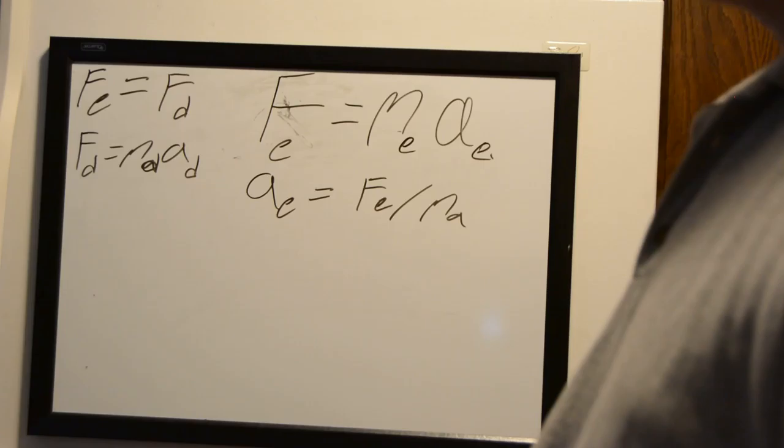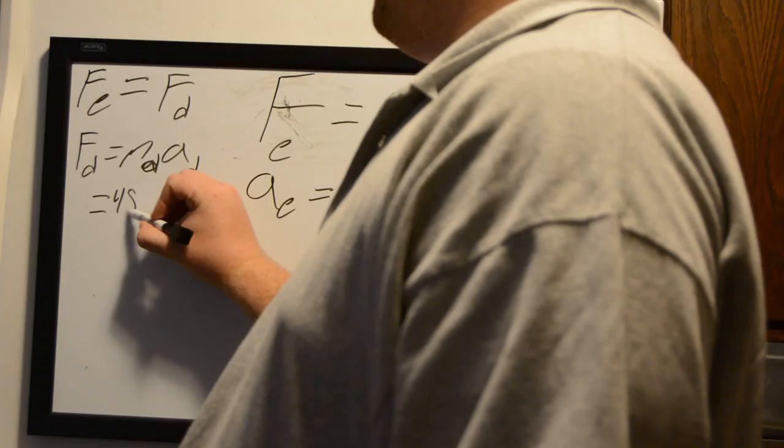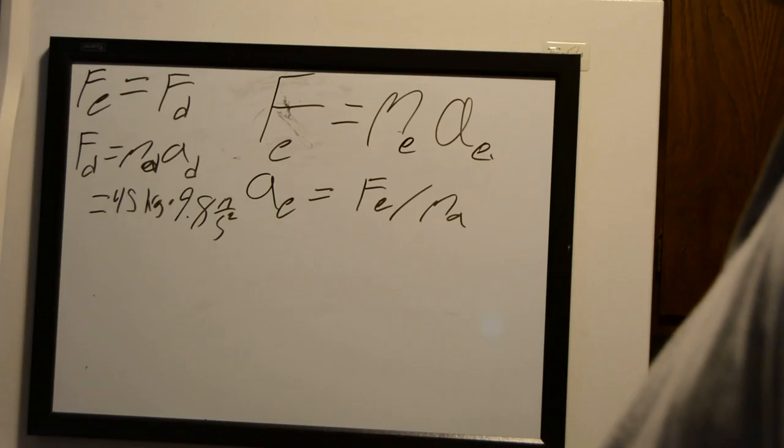Force of the diver is equal to the mass of the diver times the acceleration of the diver. And we're given both of these in the problem. So we know that's 45 kilograms times 9.8 meters per second squared.